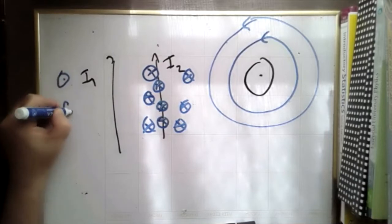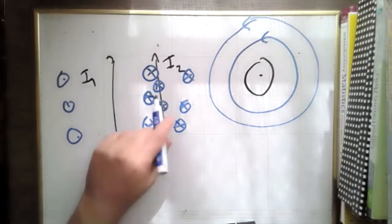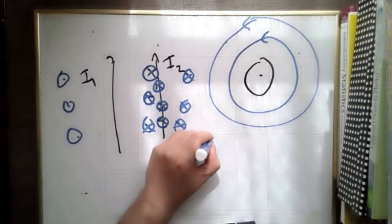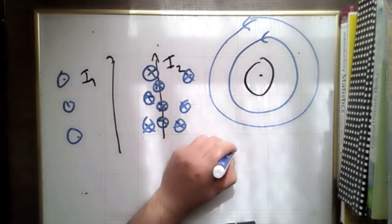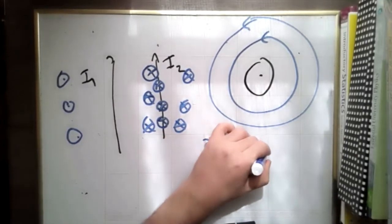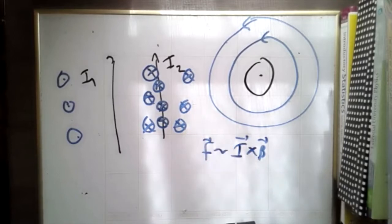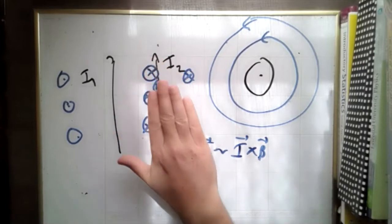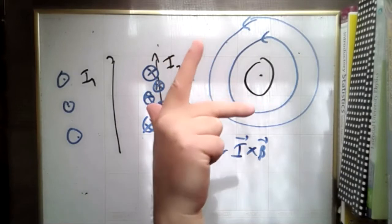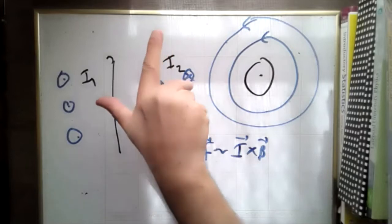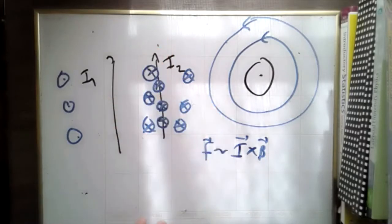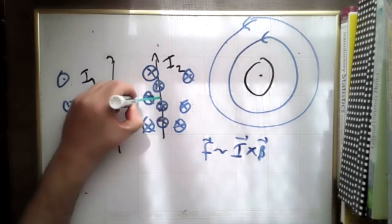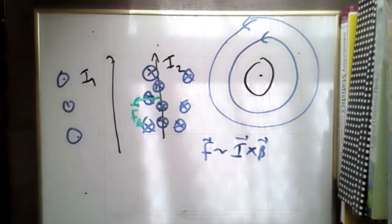Out of the board over here. So on this second wire, the magnetic field from I1 points down. The force goes like I cross B. We're only looking at direction right now. The magnetic force will be proportional to and point in the direction of I cross B. So I points that way. I have to spin my hand around until my middle finger points in the direction of B — that's down. Then my thumb is F. So the magnetic force on this wire points to the left.